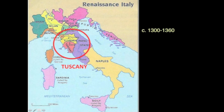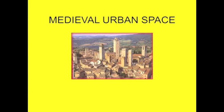The area we're going to concentrate on is Tuscany, which we looked at briefly when we saw Siena and Florence and Pisa and a number of the great cathedral towns in that area. The first thing I want to mention is the nature of medieval urban space — very dense, very tightly tangled.